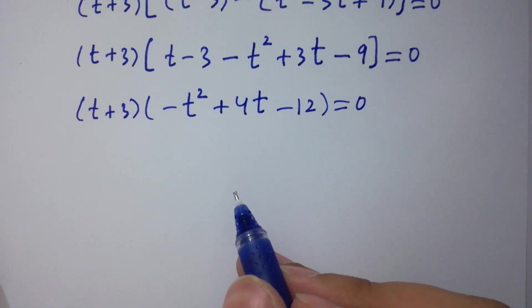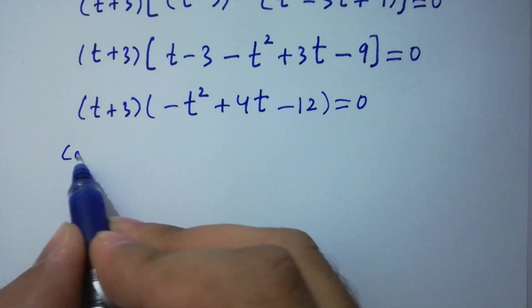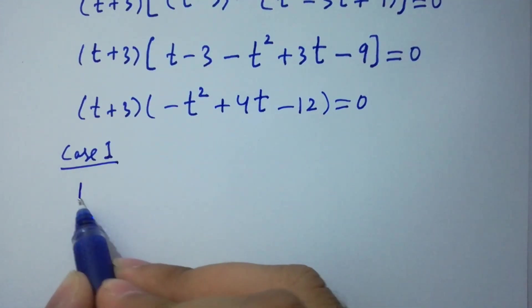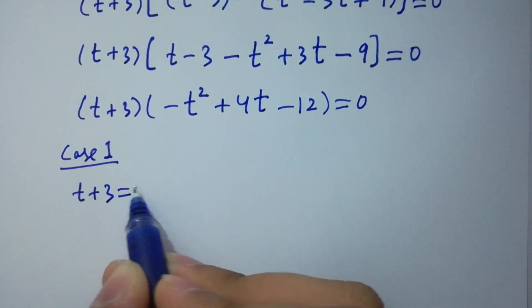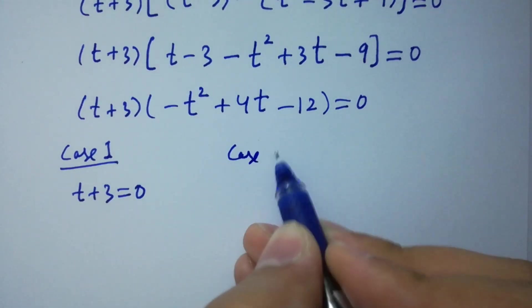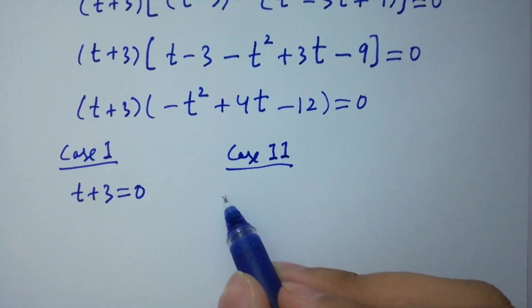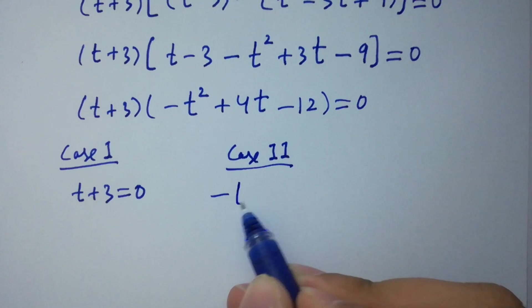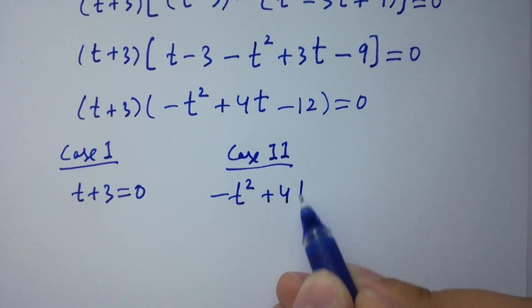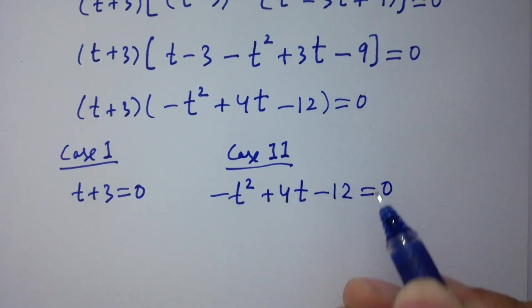We have two cases here. Case 1: t plus 3 equal to 0. Case 2: minus t-squared plus 4t minus 12 equal to 0.